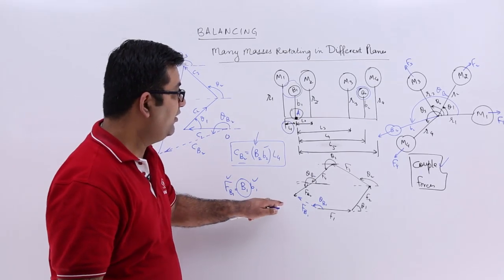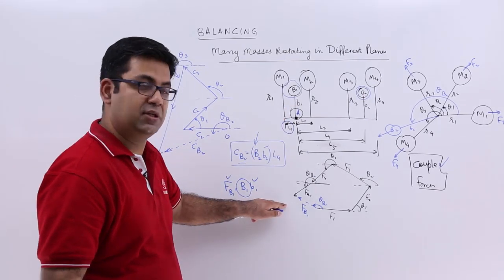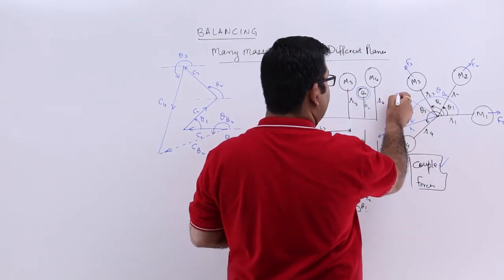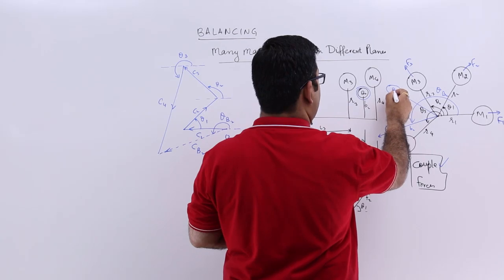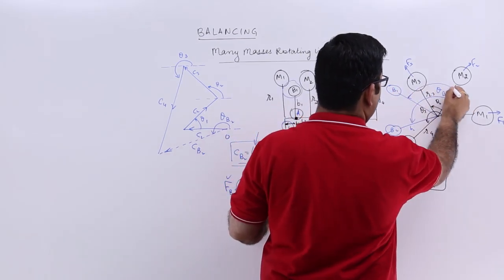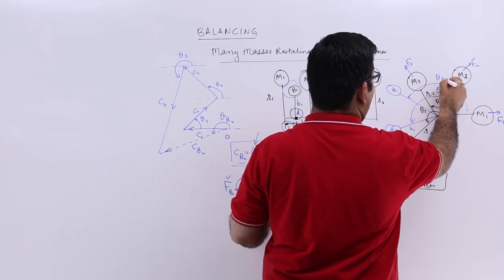And then we can draw that on, we can draw this on this particular diagram and that would be like this. So this is B1. B1 at an orientation of theta B1.